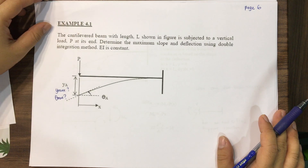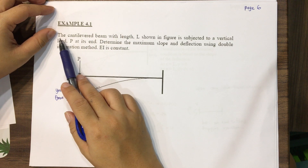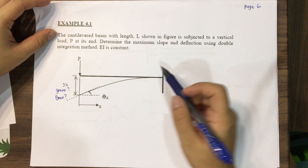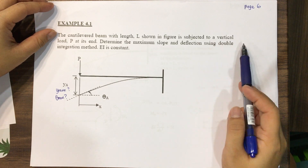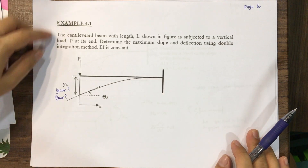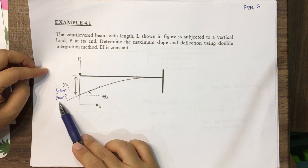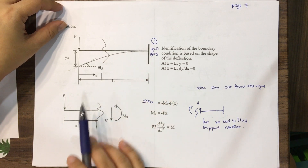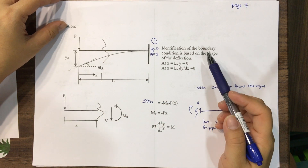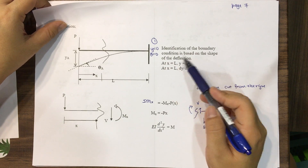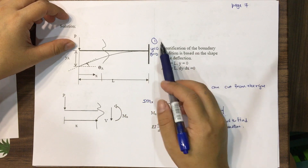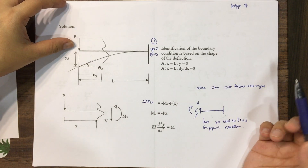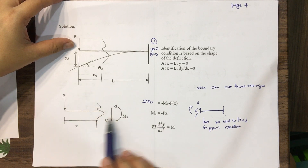Now we go to the first example, example 4.1 in the module. A cantilever beam of length L is subjected to a vertical load P at the free end. We need to determine the maximum slope and deflection using the double integration method, where EI is constant. The solution requires cutting the beam and first identifying the boundary conditions: at the fixed support, y equals zero and dy/dx equals zero.